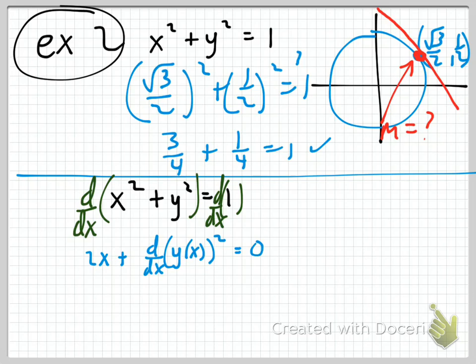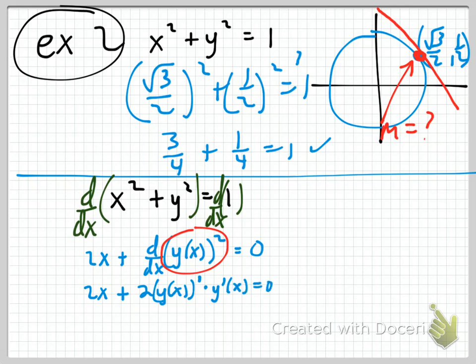The derivative of the 1 is 0. So we have 2x plus the d/dx of y of x squared: we bring the 2 out in front, multiply by what's inside to the first power, then multiply by the derivative of what's inside.